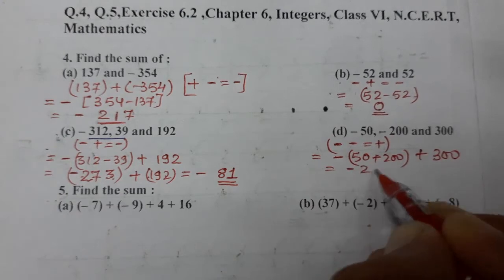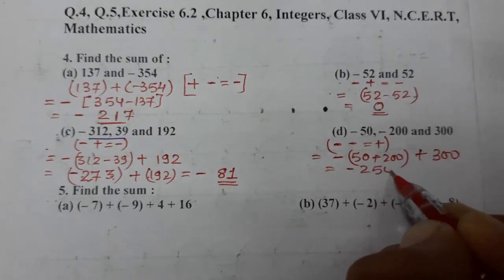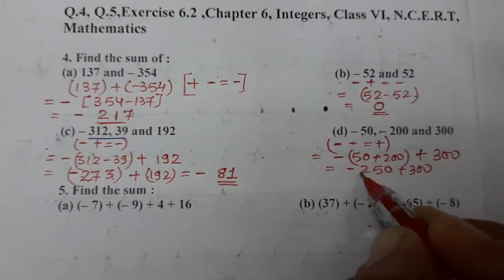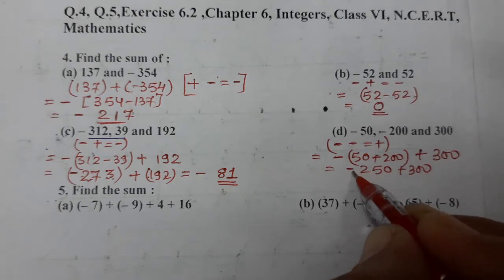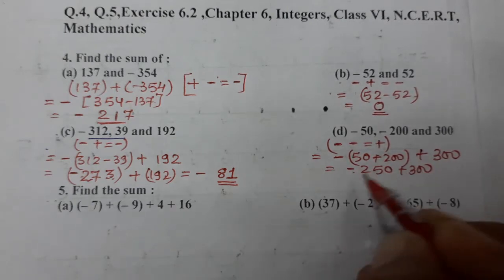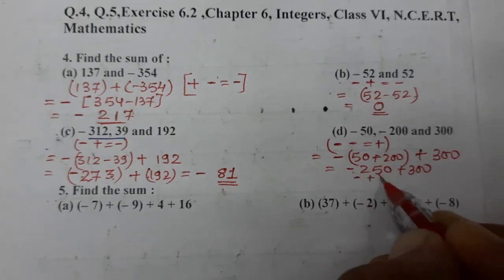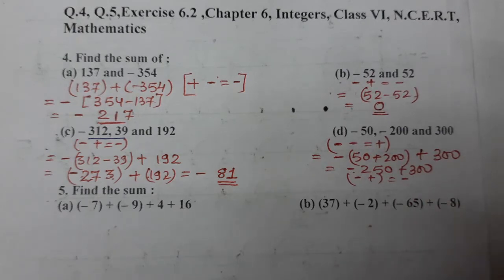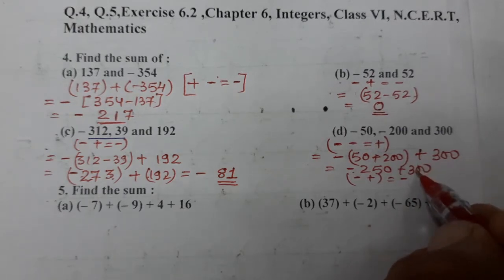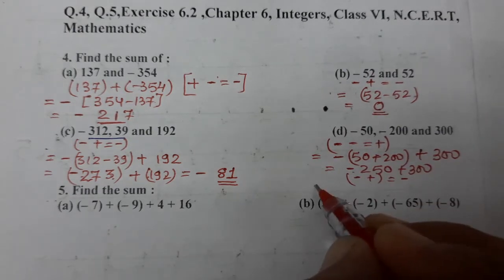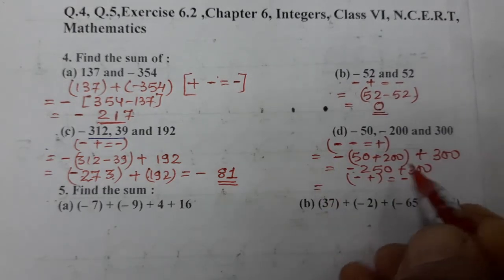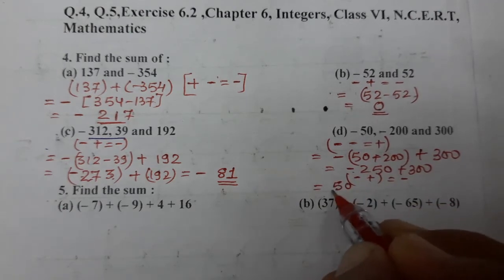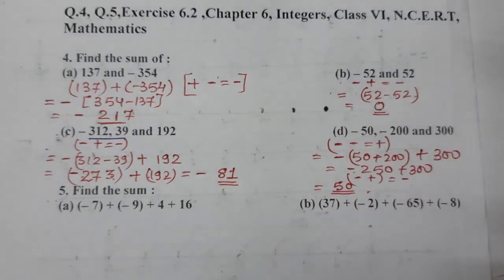So we have minus 250 and plus 300. Again ek 1 minus aur 1 plus — subtract karna rahta hai. Put the sign of bigger one. Plus 300 bada hai, to 300 mein se 250 gaye — plus 50 hai. Simply 50 we can write.